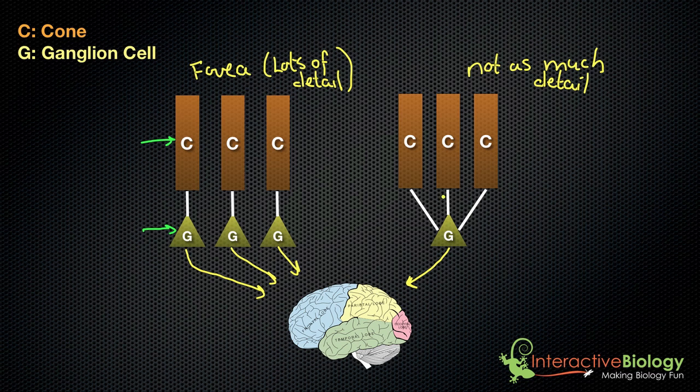So I can still see what is being picked up by these cones, but I'm not going to see as much detail. So the receptive field of this ganglion cell includes these three cones. The receptive field of this ganglion cell just includes one cone.